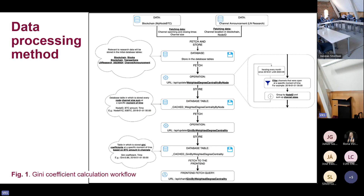The data processing method is visualized in this slide. The first step was to gather data from the second layer of the blockchain, using the Lightning Network Research Community, which provided us with channel announcement messages and node announcement messages. The second step was to gather data from the first layer — the Bitcoin blockchain — including timestamps, transaction amounts, and channel status, extracted using the MyNode BTC operating system. All collected data was then linked and stored in three separate database tables, joined together by the channel ID, which consists of a block height, transaction index, and transaction output index.